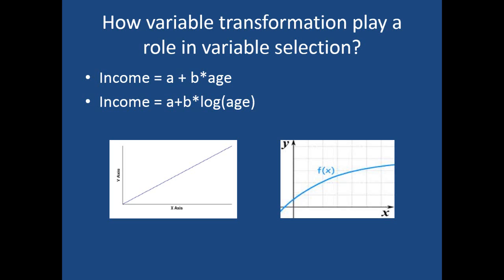We can drop age from the set of variables for the model and instead take a logarithm transformation of that variable and use that transformed variable in the model. That will be more appropriate and more suitable for forecasting and also for explaining things later on. So that is also one way of selecting the best set of variables for the model.